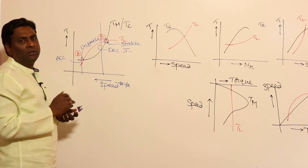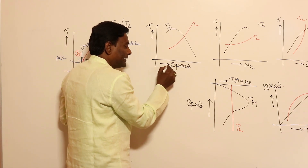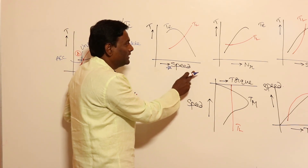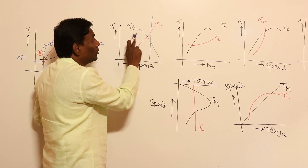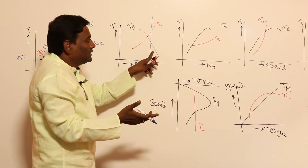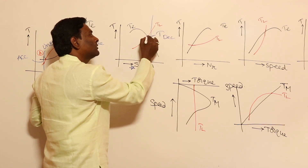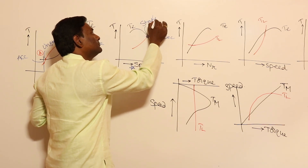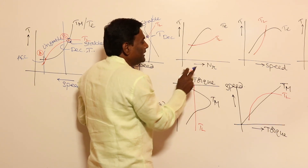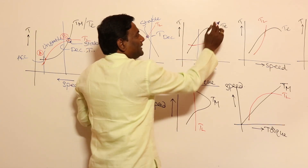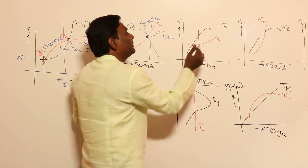This method is also tested in GATE questions. Always check the increasing direction of speed. Draw a line immediately after the junction point: if load torque requirement is more and electromagnetic torque developed is less, opposition is more than push, resulting in decelerating torque — so that junction point is stable. Conversely, if electromagnetic torque is more and load torque requirement is less, it results in accelerating torque — that point is unstable.